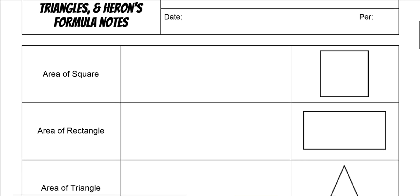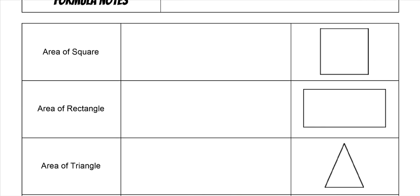So first of all, we need to go over a bunch of different formulas. The area of a square is sides squared. All four sides of the square are the same, so whatever that number is on any of the sides, you square that number and that will give you the area of the square.